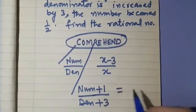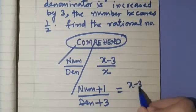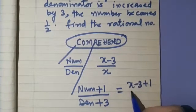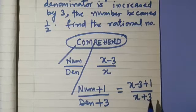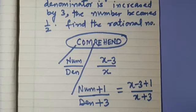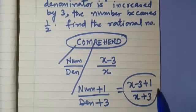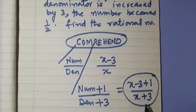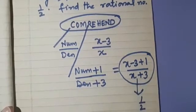So the expression becomes x minus 3 plus 1, upon x plus 3. Since the number becomes 1/2, we get: x minus 3 plus 1 upon x plus 3 is equal to 1/2.